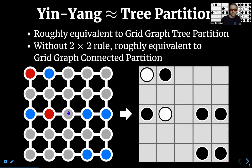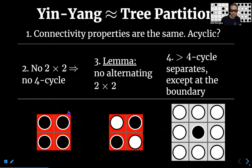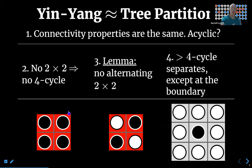These two puzzles — yin-yang and grid graph tree partition — are roughly equivalent. We told you two grid graph problems: grid graph connected partition and grid graph tree partition. The version that is essentially the same as yin-yang is the tree partition version. And if you remove the no-monochromatic two-by-two rule from yin-yang, you get essentially grid graph connected partition. The connectivity constraints cause the white and black circles to be connected, just like the two color classes in our graph partition.